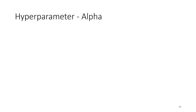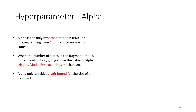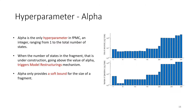In FPMC, we introduce a hyperparameter alpha to control when the model reconstruction mechanism will be triggered. Due to the third condition, alpha only provides a soft output bound for the size of the fragment. The FPMC results are also sensitive to the selection of this alpha, as shown in the figure.